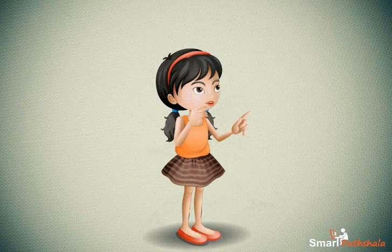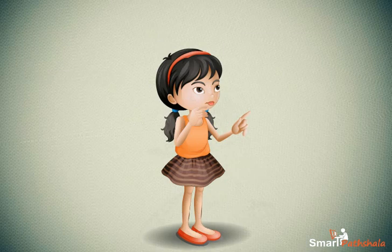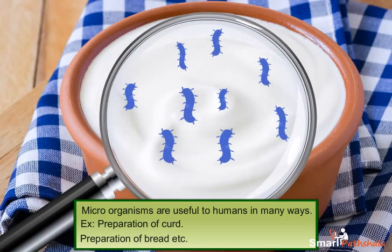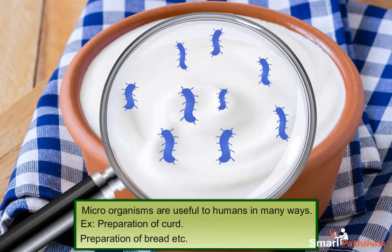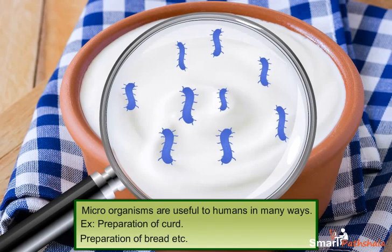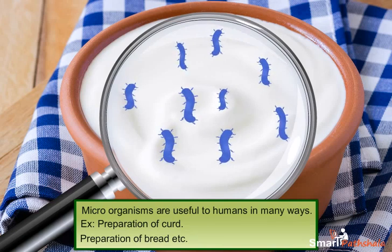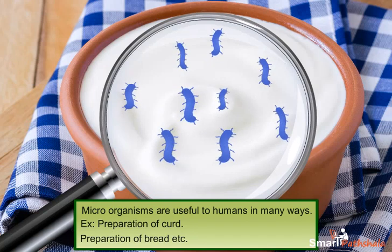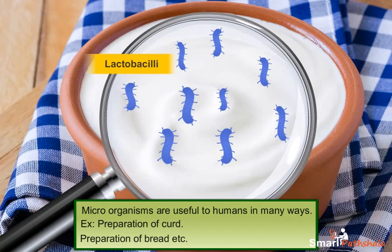As we all know that a coin has two sides, the head and the tail. In the same way, micro-organisms also play two roles as the friend and the foe. Apart from causing diseases, micro-organisms also help us in many ways in our day-to-day life, and hence they are also called as friends. Micro-organisms are also called as microbes. The simplest example to illustrate the advantage of microbes is curd, as it is produced by the microbial action of bacteria named lactobacilli in milk.